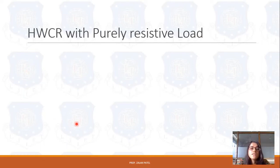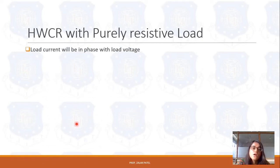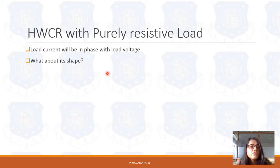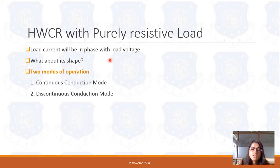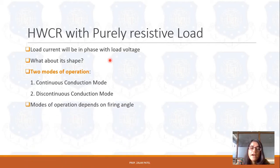Now let's see the HWCR with purely resistive load. The load current will be in phase with load voltage because of the purely resistive circuit. The load voltage waveform is the same shape as the load current waveform since there is no phase difference. It can operate in two modes: continuous conduction mode and discontinuous conduction mode. Which mode it operates in depends on the firing angle — if the firing angle is less than or equal to 30 degrees it will operate in continuous conduction mode, and if greater than 30 degrees it operates in discontinuous mode.